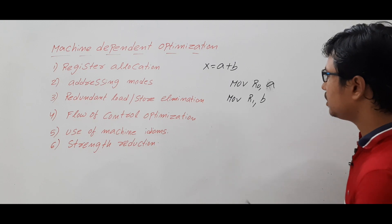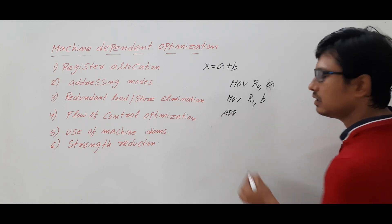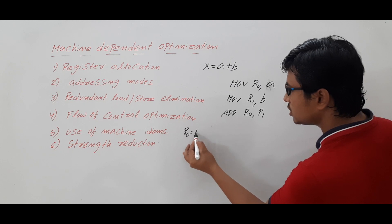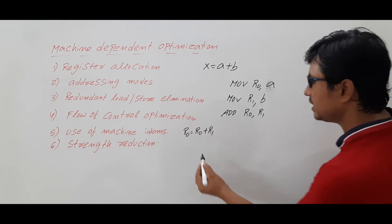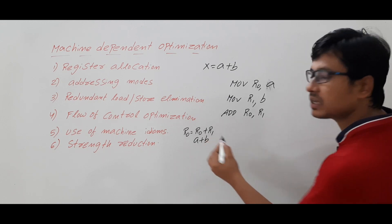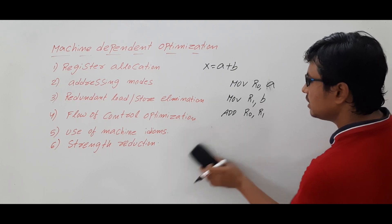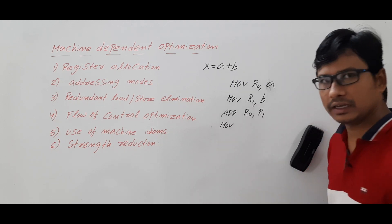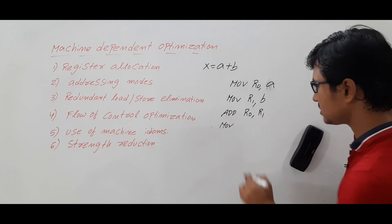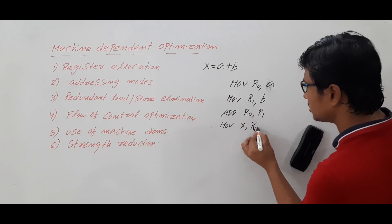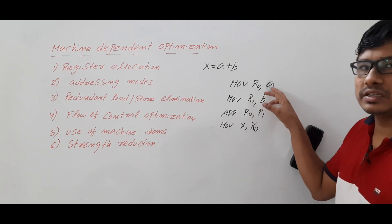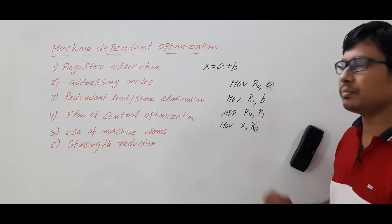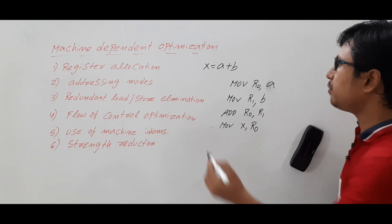Then you perform: ADD r0, r1 — which means r0 = r0 + r1, so indirectly a + b is computed and the result is stored in r0. Then you write: MOVE x, r0 — this is the store instruction. So the load instructions move a to r0 and b to r1, then you perform addition, then store the result. These four instructions correctly perform x = a + b.